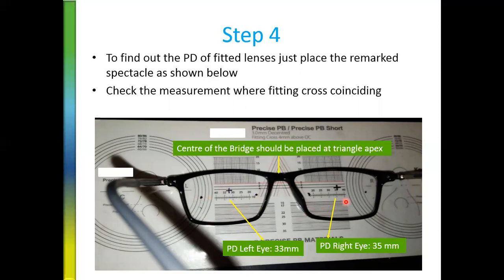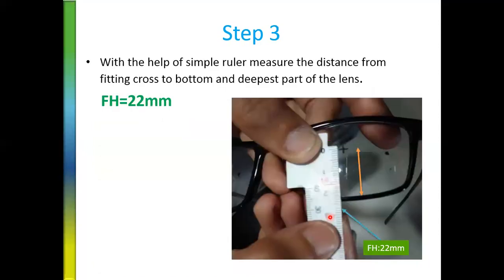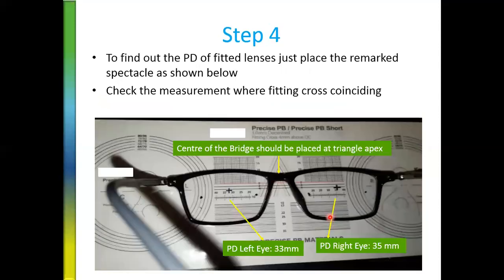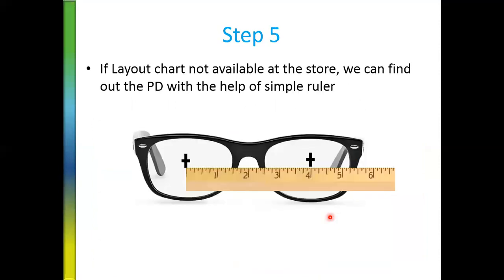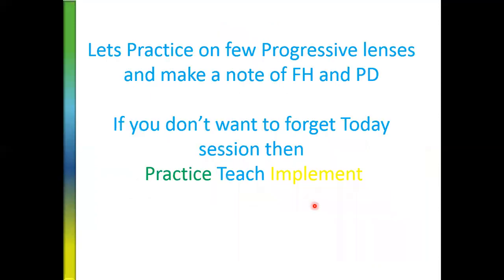Now we can verify whether the parameters match what was ordered. If the fitting height ordered was 22 and it is fitted at 22, the PD ordered was 35 and 33 and it is fitted at 35 and 33, the micro-etchings are in a straight line, and the distance and near reference circles are covered in the frame — this is a QC pass lens. But if you ordered a fitting height of 19 and it comes to 22, or you ordered a PD of 35 and when you remark it shows 30, those are QC fail scenarios.